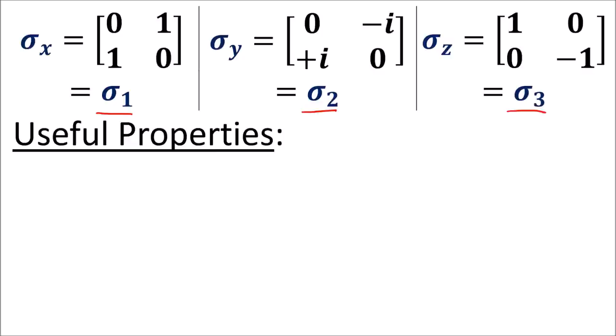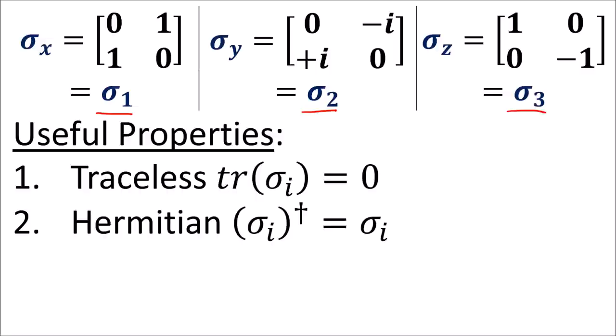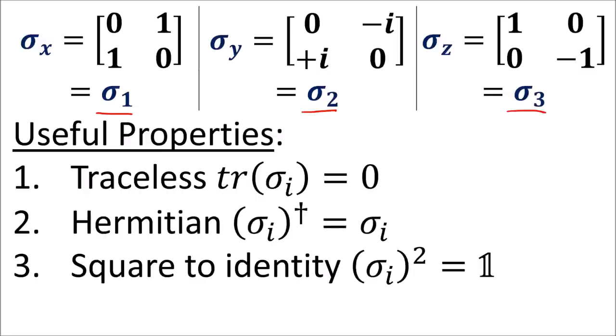These matrices have some nice properties that make them useful for doing geometry. First, they have zero trace. Second, they're all Hermitian. Third, they all square to the identity matrix.